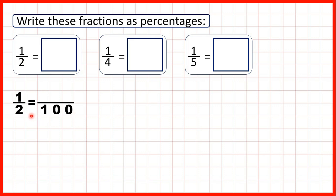To find equivalent fractions, we can use multiplication. 2 times 50 is 100, and what we do to the denominator, we need to do to the numerator as well, and 1 times 50 is 50. So because 1 half is equivalent to 50 hundredths, 1 half is 50%. Now we have 1 quarter.